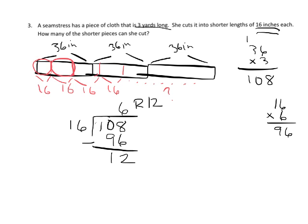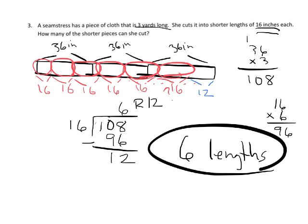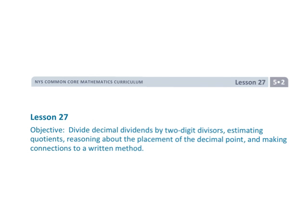So that's 6 times with 12 inches left over. How many 16s can we fit in? One, two, three, four, five, six of them. We don't have quite enough to make another piece, and that is question three. So the answer is six lengths. And that's Lesson 27 of Module 2 for fifth grade, where we are really using that standard algorithm for division.